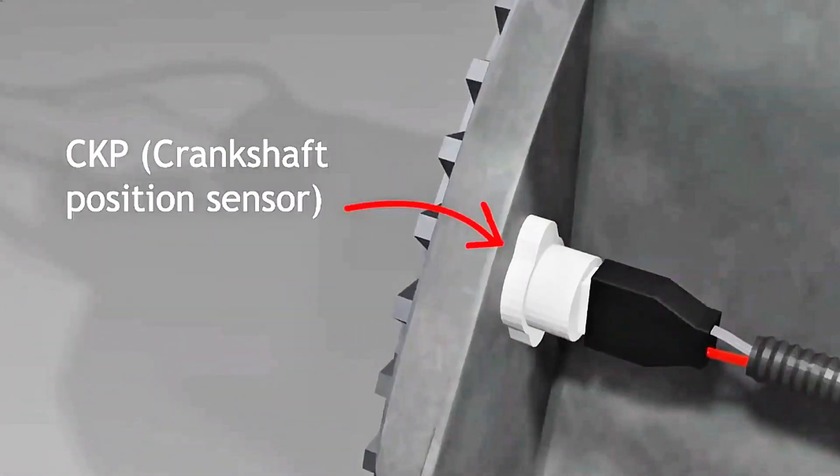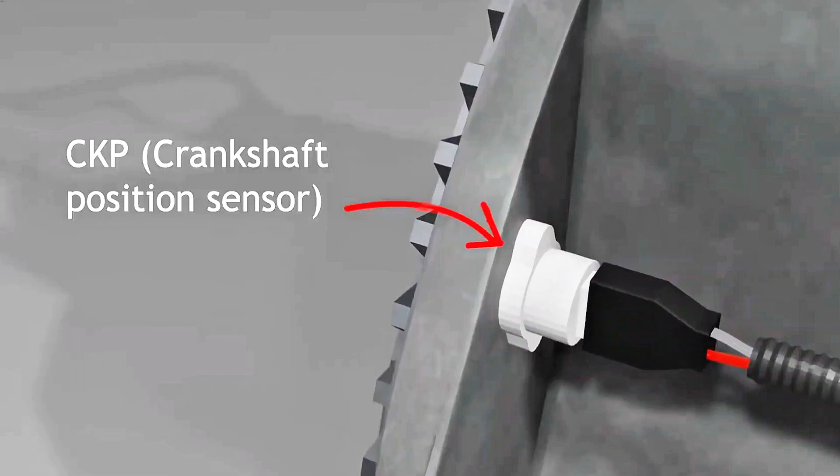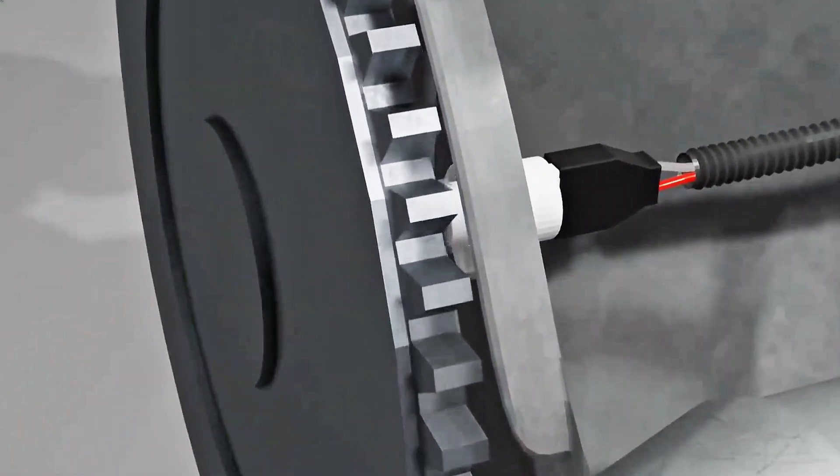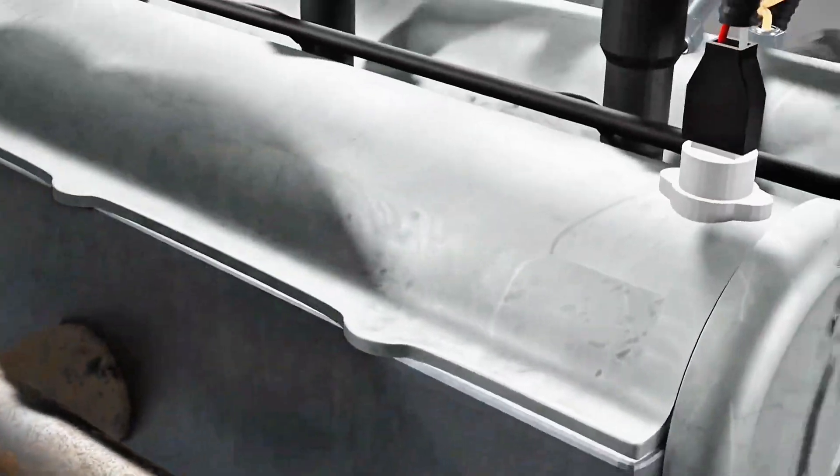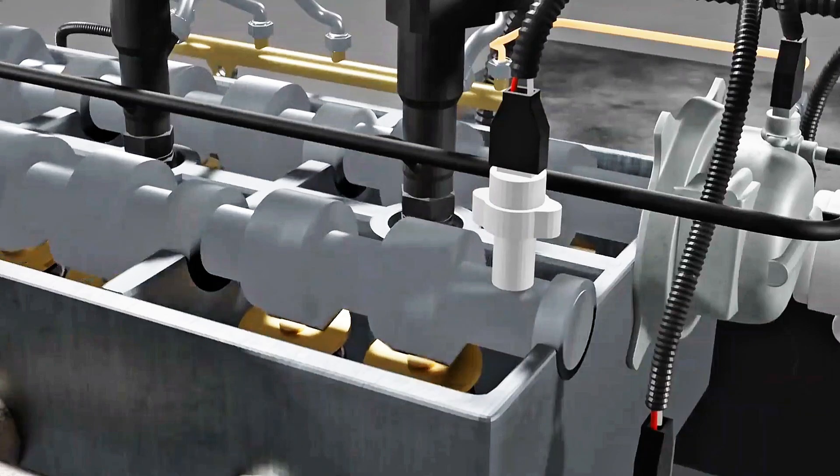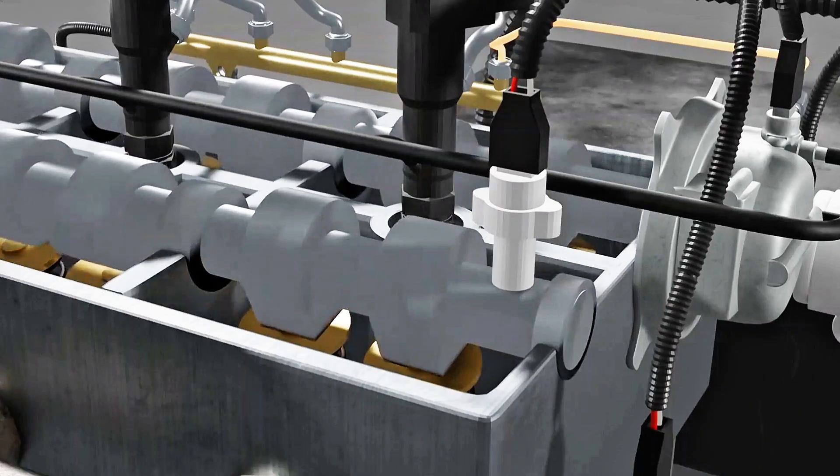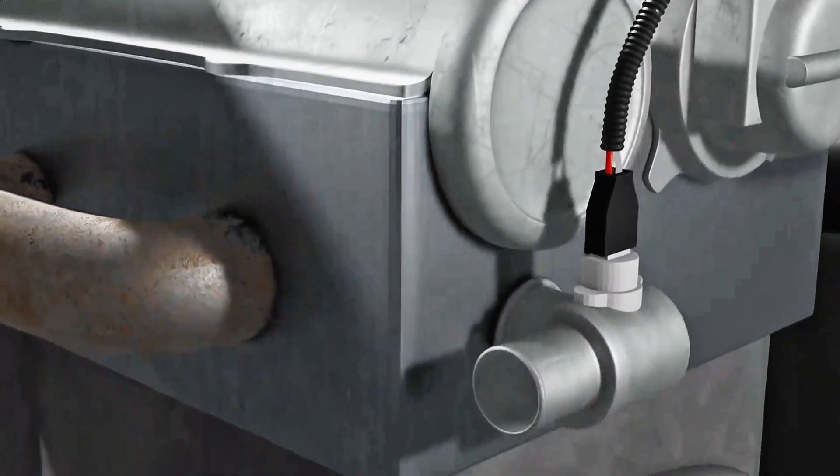Then there are CKP and CMP sensors. Both of these sensors function to measure engine RPM and to know the top position of the engine. So with these two sensors, the timing to inject diesel can be known.